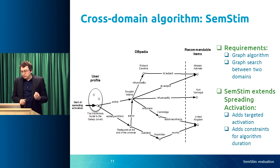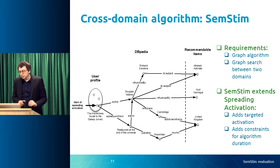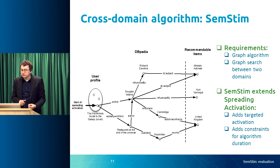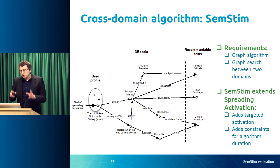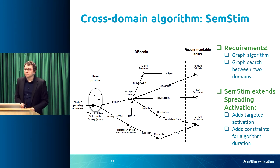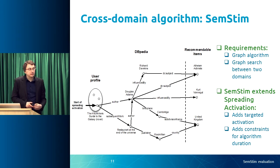The extensions that SEMSTEM introduces are targeted activation — a description of how to find items from the target domain — and constraints for the duration of the algorithm, so you can restart it if there are not enough activated nodes from the target domain.